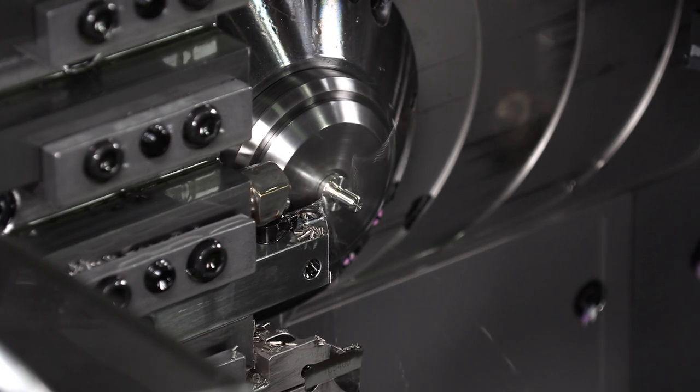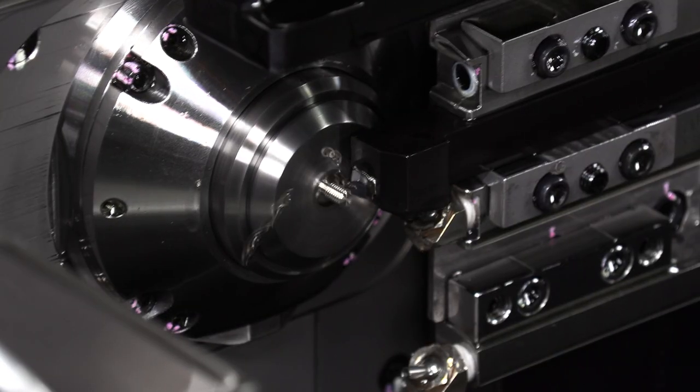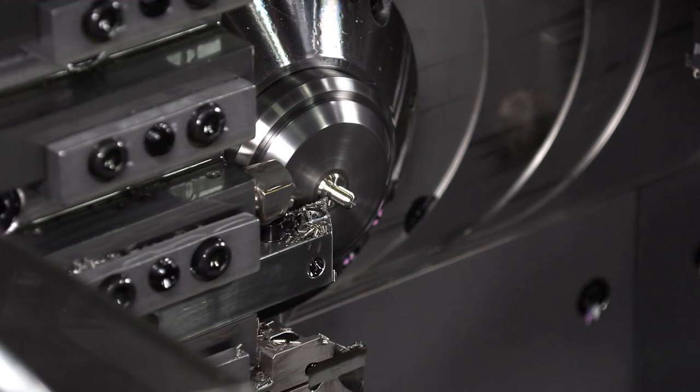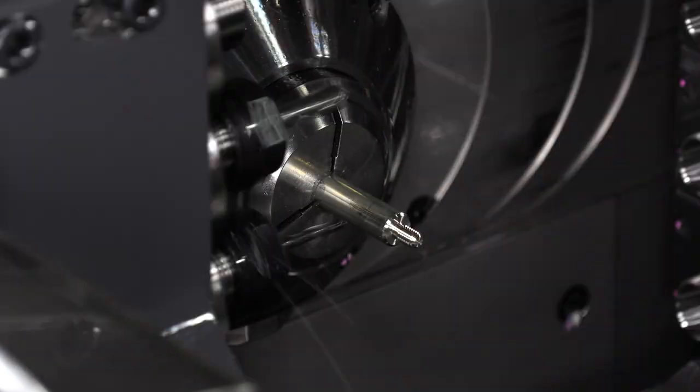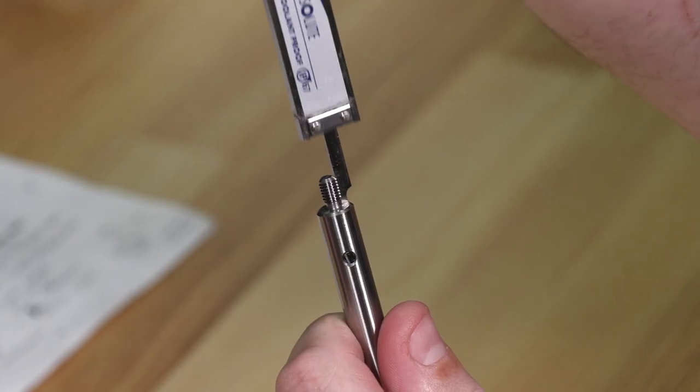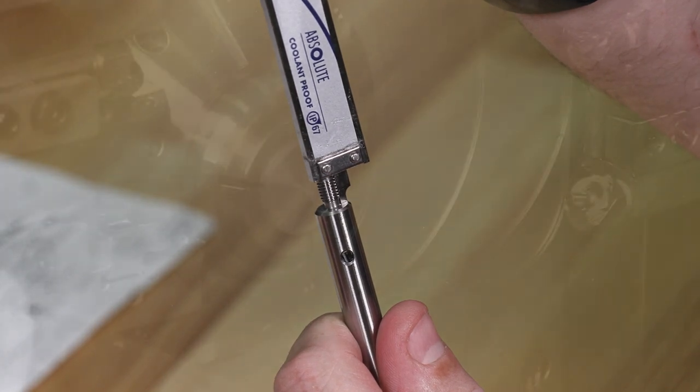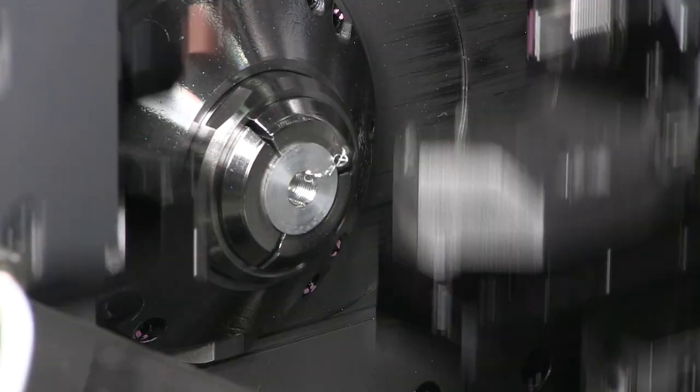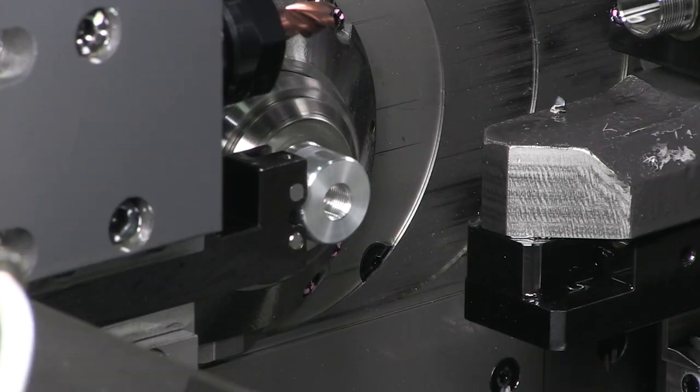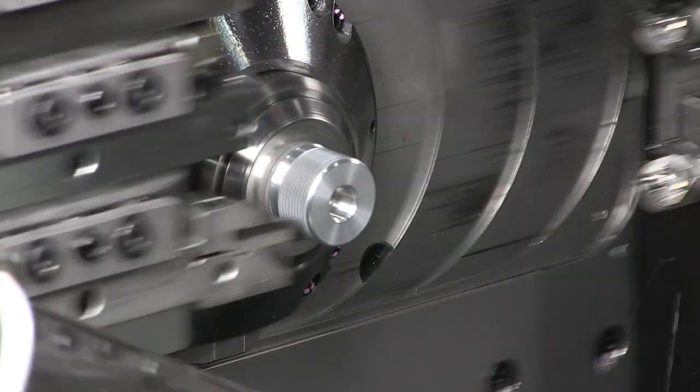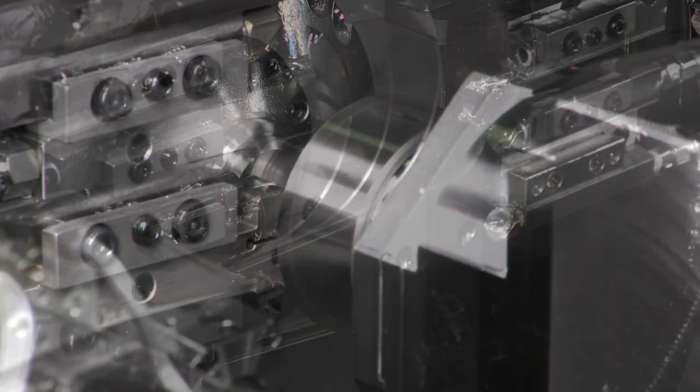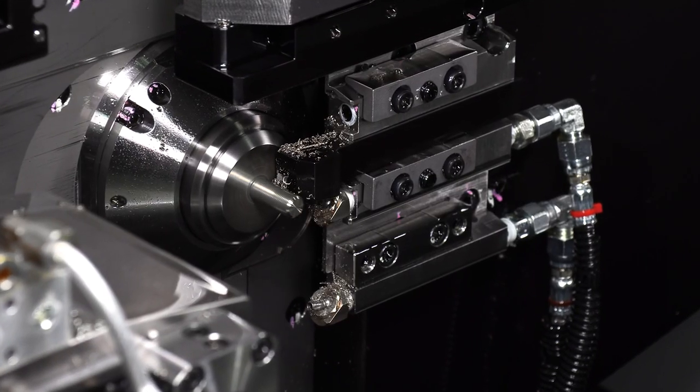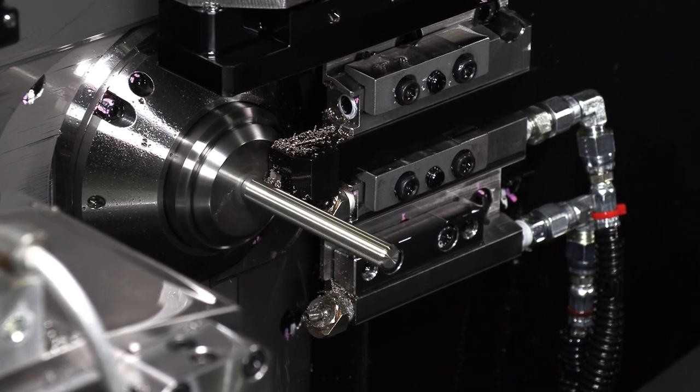Over in the lathe department, the router rods and extension rods are turned out of stainless steel. The micro adjust knob is turned on another lathe out of aluminum, and the micro adjust threaded rod is turned from stainless steel.